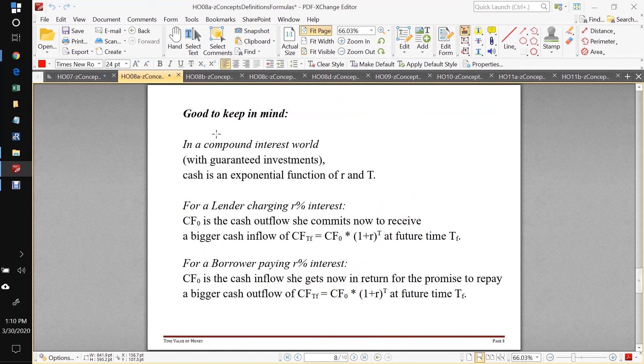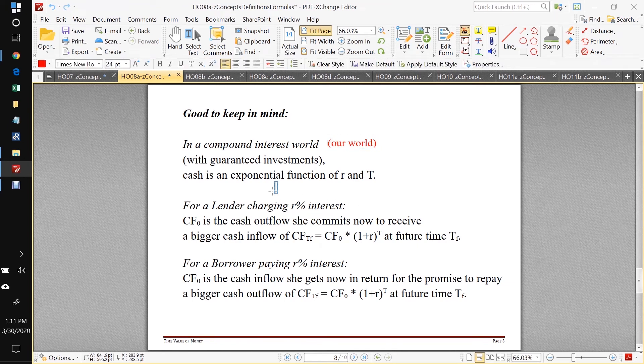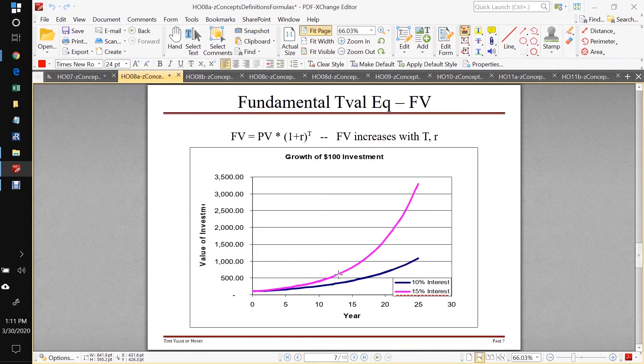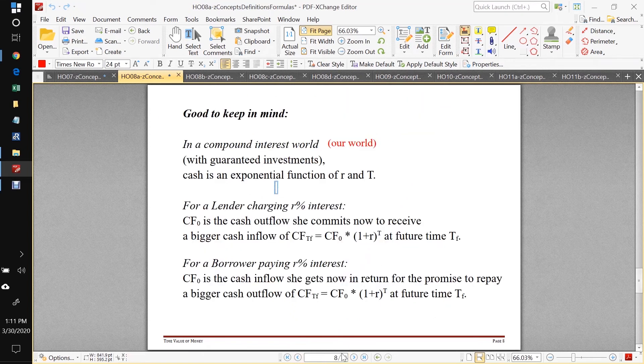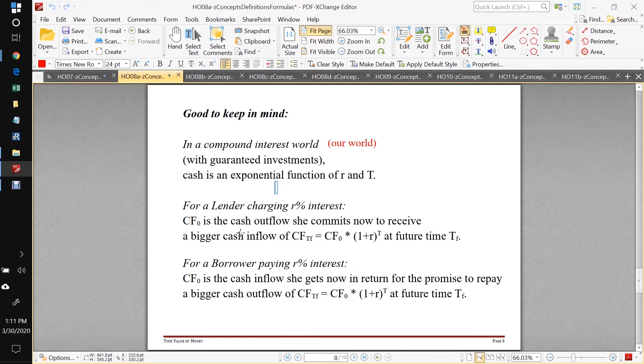And a few good things to keep in mind in a compound interest world, which is typically our world. Whenever our investments are guaranteed, cash truly is an exponential function of time, you can see it clearly on that graph. And for a lender charging r% interest, cash flow at t equals zero is her cash outflow, she commits now to receive hopefully a bigger amount of cash back at the future time tf.